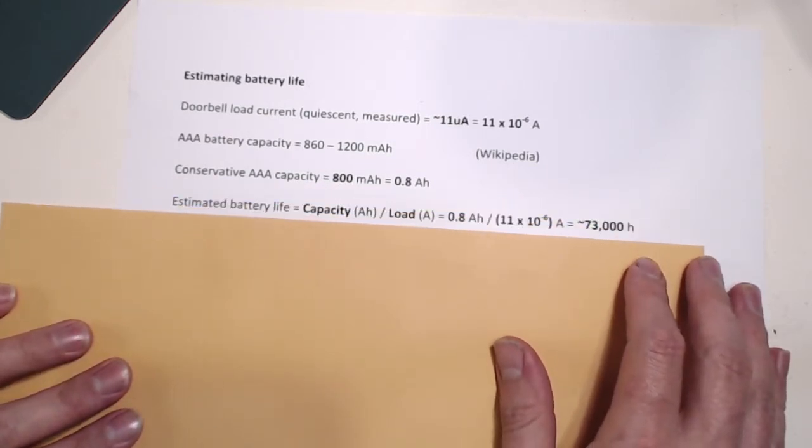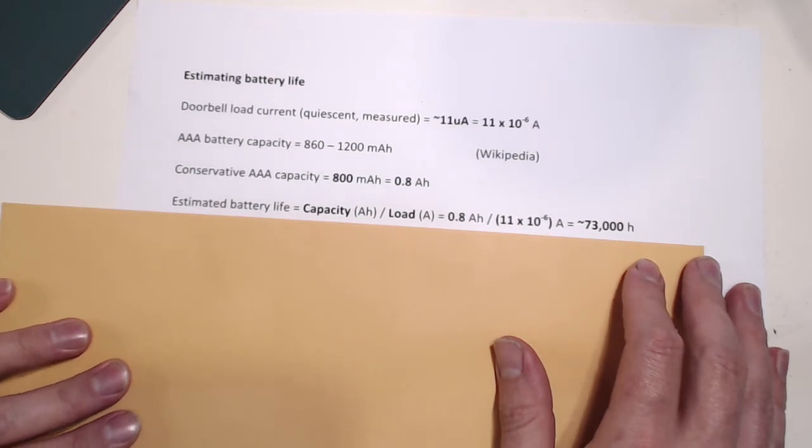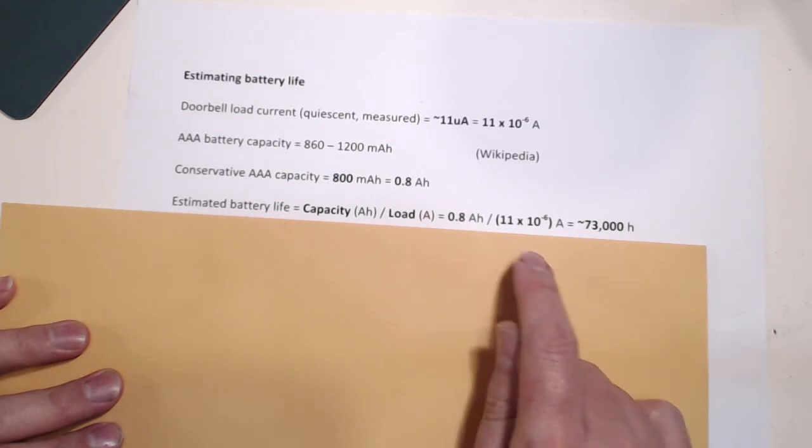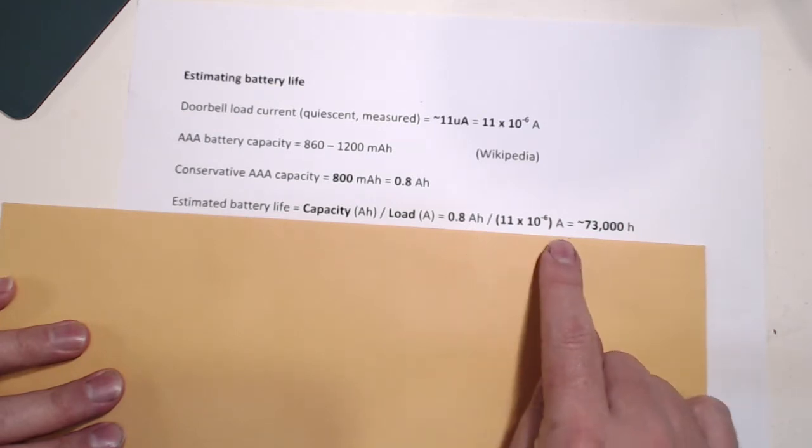Now, to estimate the battery life, we really just need to divide the capacity in amp hours by the load in amps, and what happens is that the element of amperes here cancels out, because it's at the top and the bottom of this division, and we're left with a figure expressed in hours.